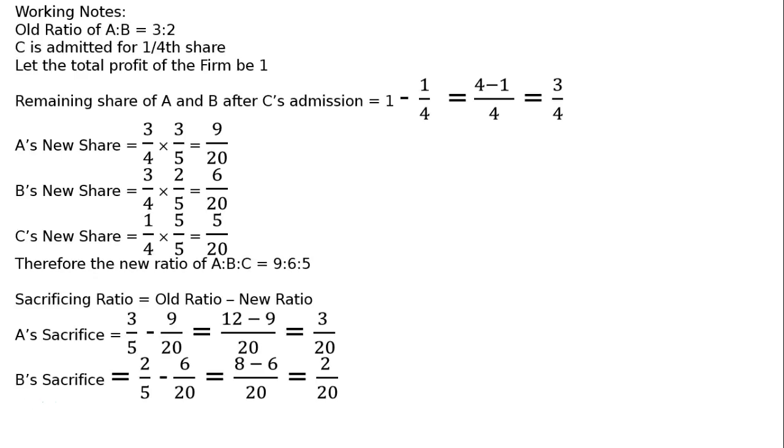B's sacrifice is equal to 2 upon 5 old share minus 6 upon 20 new share. That equals LCM 20. 4 into 2 is 8 minus 6, that equals 2 by 20. Therefore, the sacrificing ratio of A to B is equal to 3 is to 2.